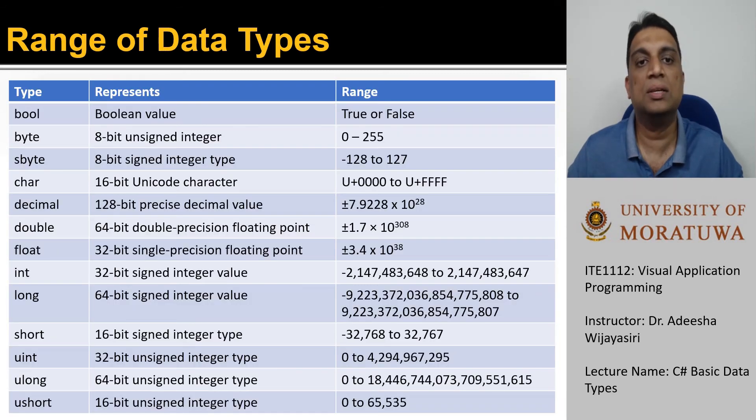This table shows a summary of what each data type represents and its range. Range of the boolean is true and false. Range of the byte is 0 to 255 and it represents an 8-bit unsigned integer. If you need to represent 8-bit signed integers, then you can use the type s-byte.